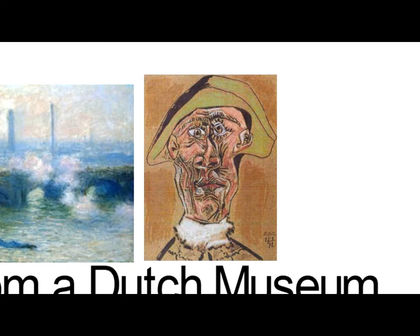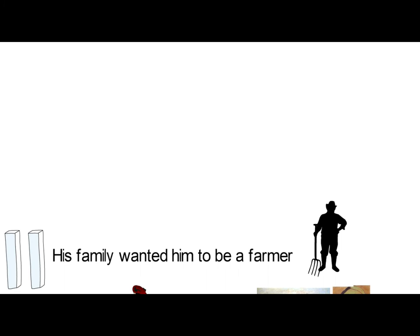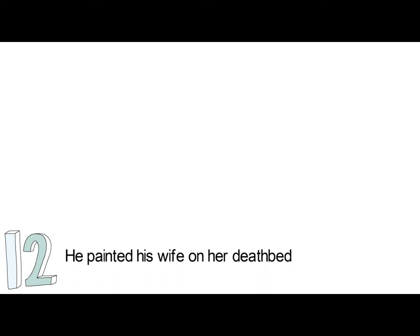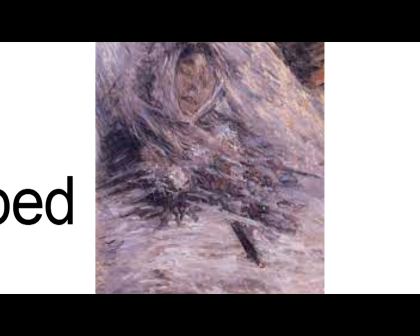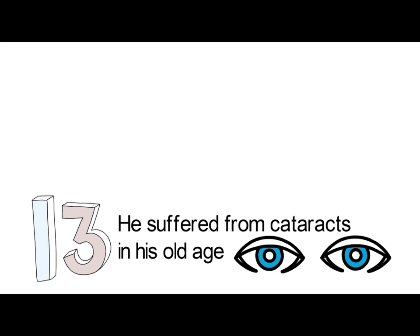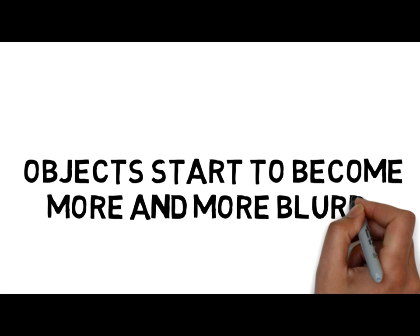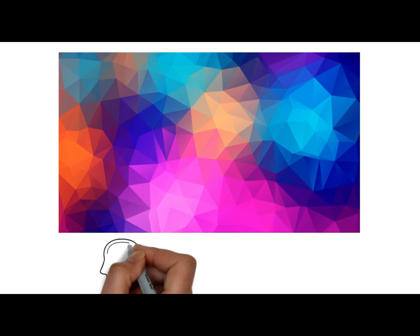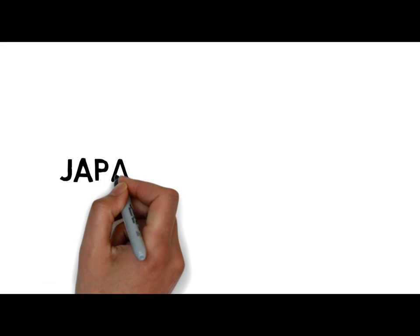Number 11: His family wanted him to be a farmer. Number 12: He painted his wife on her deathbed. Monet's marriage to his wife Camille was tragically short — she died of cancer at the age of 32. He painted her alone in her room, making it one of the most intense paintings of all time. Number 13: He suffered from cataracts in his old age, but even so, he continued painting. Interestingly, you can see the progression of how the condition affected his work — objects start to become more and more blurry. Some would argue that the strong use of color in his later days was an indicator that he was using memory rather than his failing eyesight. A perfect example is the way he painted the Japanese Footbridge in 1899 compared to his later version painted in 1922.